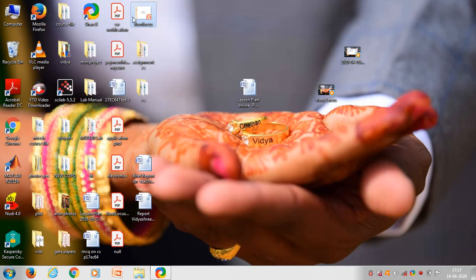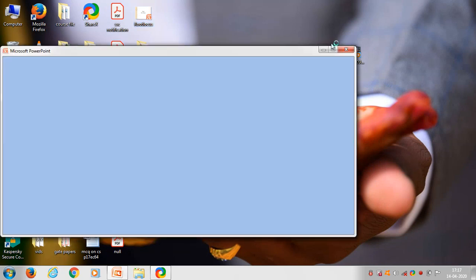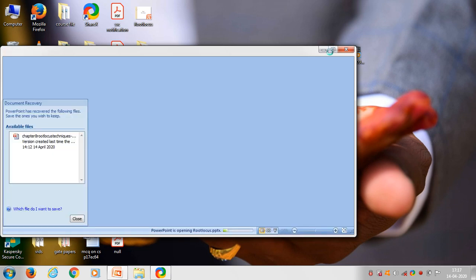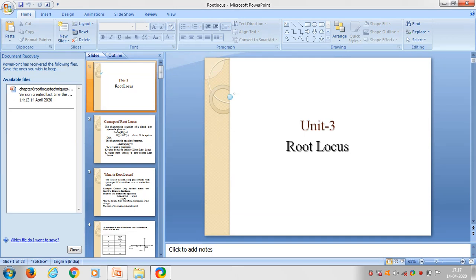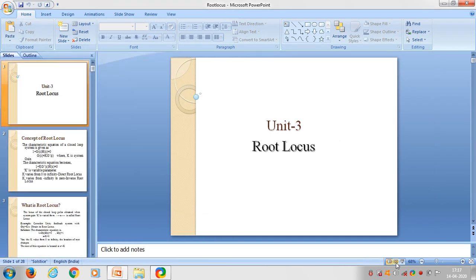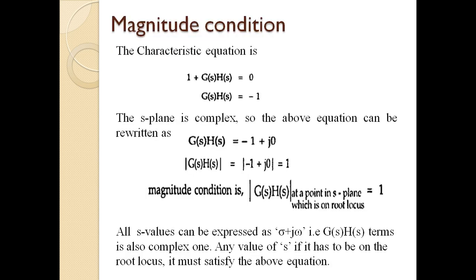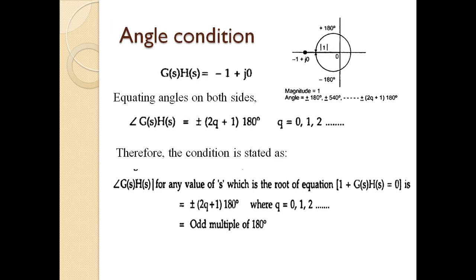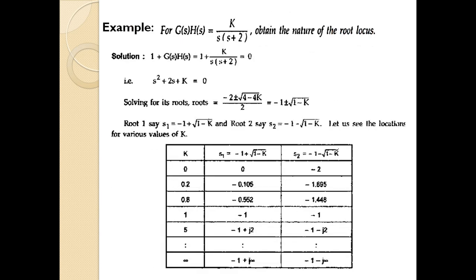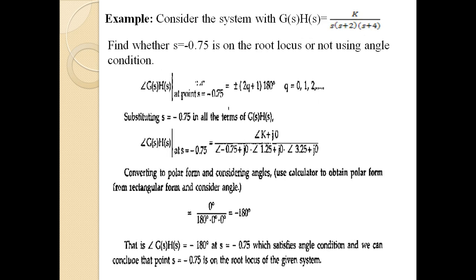We are continuing root locus rules. Yesterday we discussed three rules about root locus. Today we are trying to discuss five more rules on how to construct the root locus. In the last class we discussed what root locus means, and what conditions we need to satisfy to plot it — one is the magnitude condition, another is the angle condition.